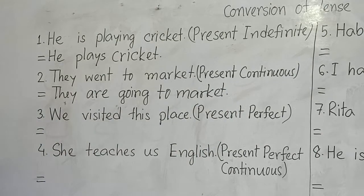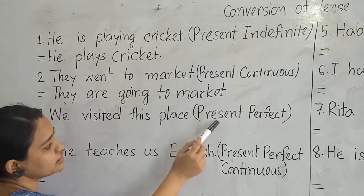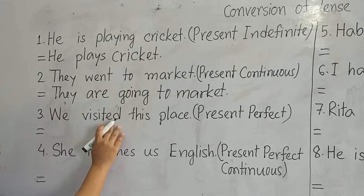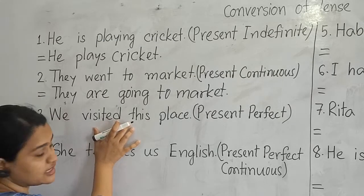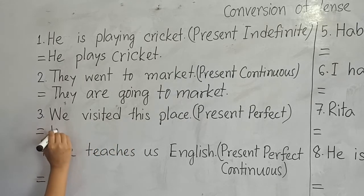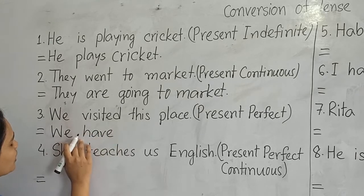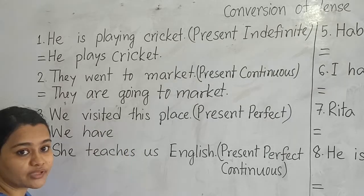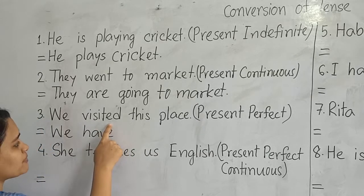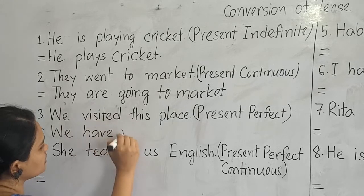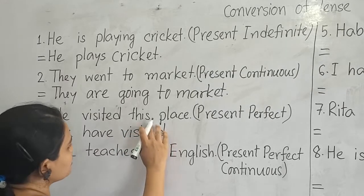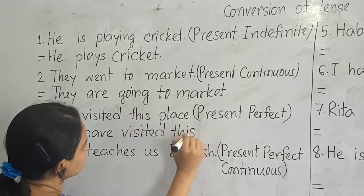Number three: 'We visited this place.' We will change it to present perfect tense. Look at the verb 'visited' — it is in the past form, so the sentence is in past indefinite tense. We will change it. Our subject is 'we', and we will write 'have' after 'we' because the subject is plural — we use 'have' after plural subjects and after 'I'. The past participle form of 'visit' is 'visited'. So: 'We have visited this place.'